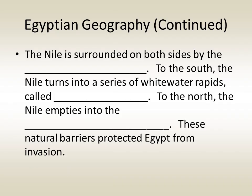The Nile is surrounded on both sides by the Sahara Desert. To the south, the river turns into a series of whitewater rapids called cataracts. To the north, the Nile empties into the Mediterranean Sea. These natural barriers protected Egypt from invasion.